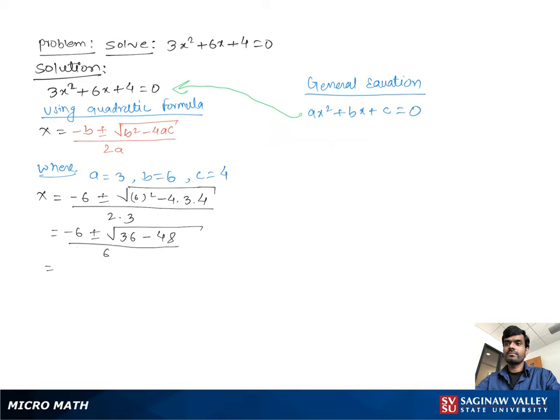Then we have negative 6 plus minus square root negative 12 over 6. Now the square root of a negative number doesn't have a real solution, but we can write it in the complex solution.